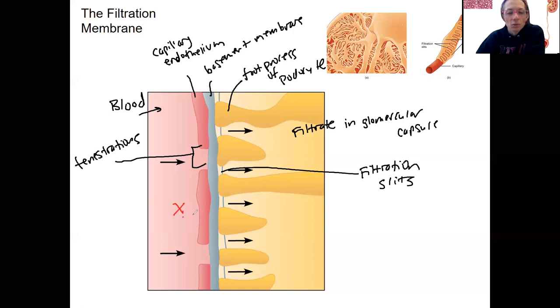Things that cannot go through: red blood cells, plasma proteins such as albumin, IgGs, protein-bound hormones, stuff like that.